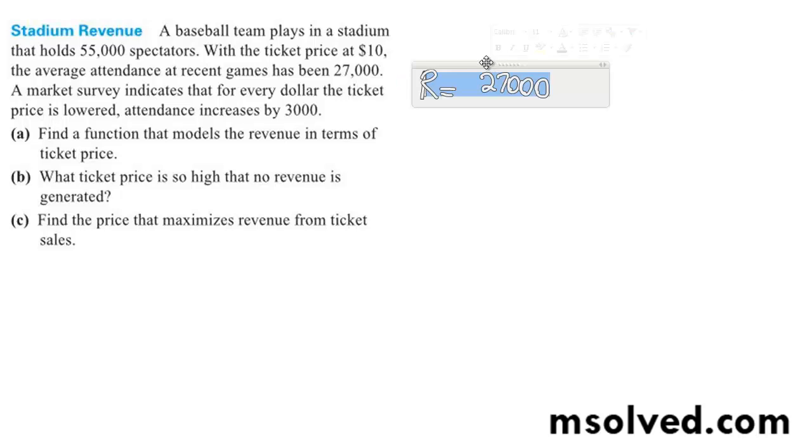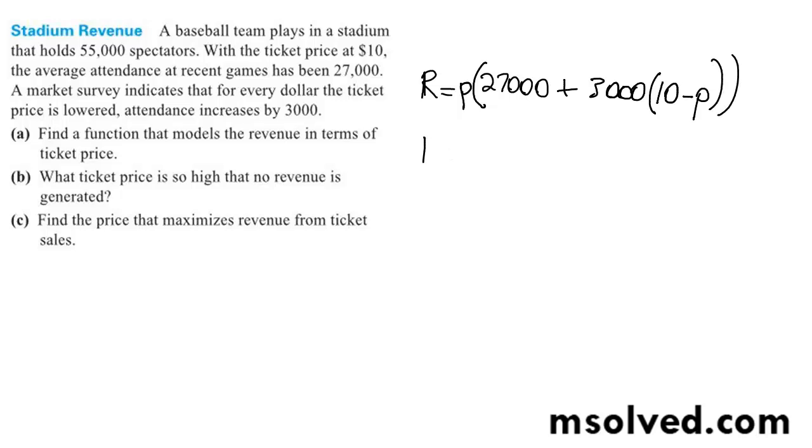And actually we're going to have P on the outside here, times P plus we're going to have 3,000, 3,000 more than 10 for every dollar amount that P is lowered. So ultimately we're going to have revenue equal